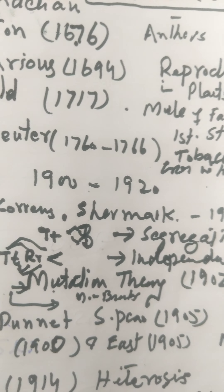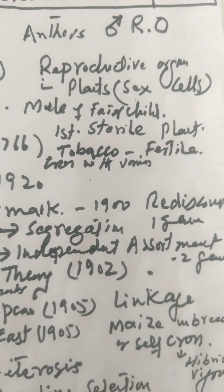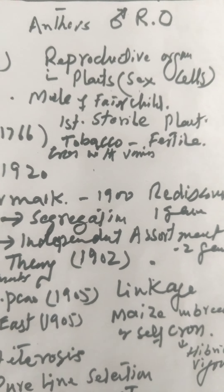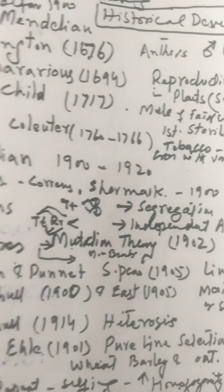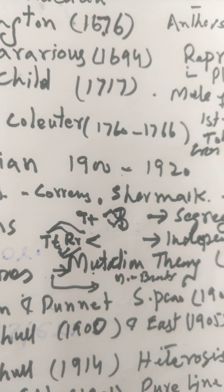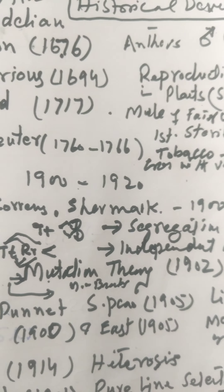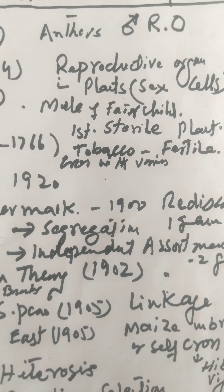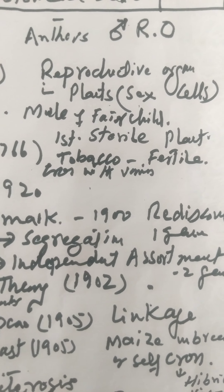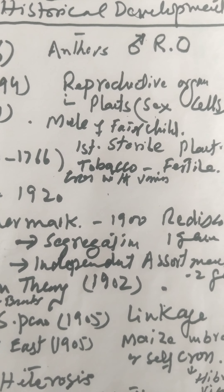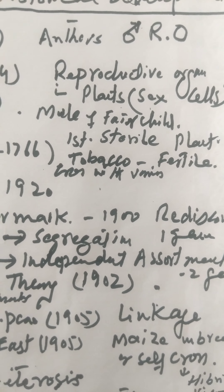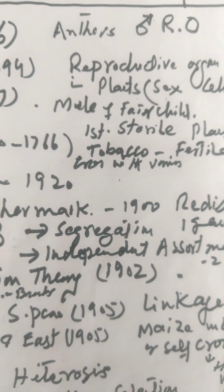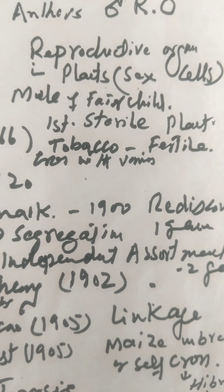Camerarius, in 1694, recognized the sex cells and reproductive organs in plant cells. He stated that, like animals, plants also have reproductive organs. Next is Fairchild in 1717. He crossed some crop varieties and developed a plant, but it was sterile. That is why it was called the first artificial hybrid, which was a sterile hybrid produced by Fairchild, also known as the 'Fairchild's Mule.'